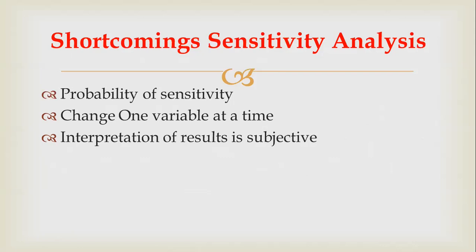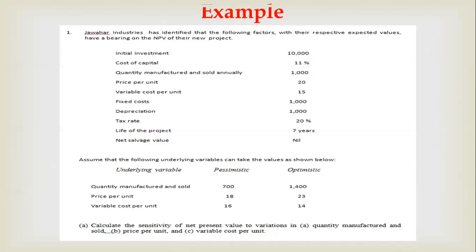Let us understand with the help of an example. On the screen you can see a problem which explains the situation of a particular company. You are supposed to identify the sensitivity of the project under three conditions. We are asked to calculate the sensitivity of net present value to variations in quantity manufactured and sold, price per unit, and variable cost per unit.